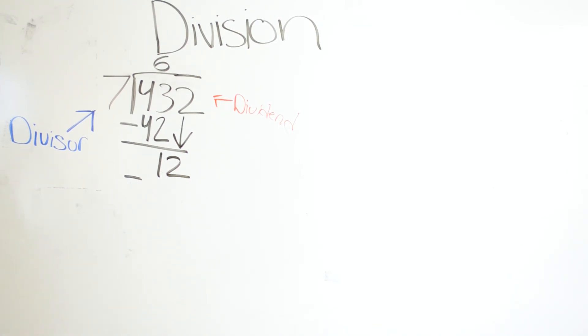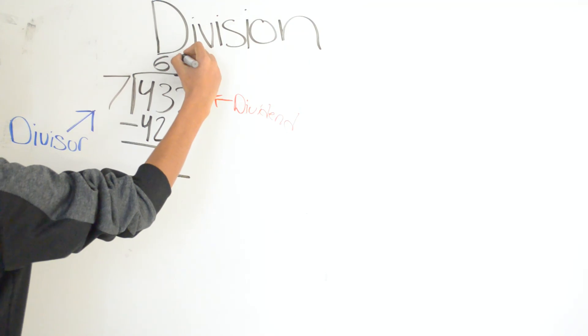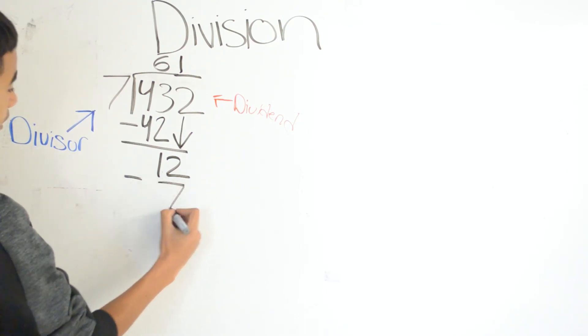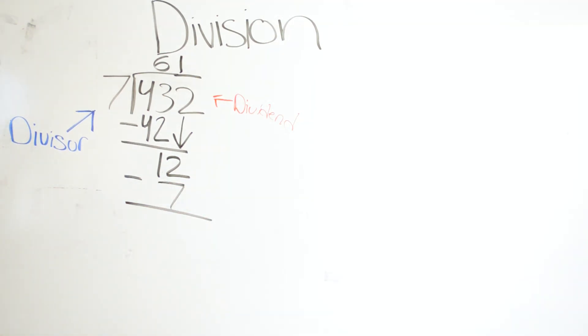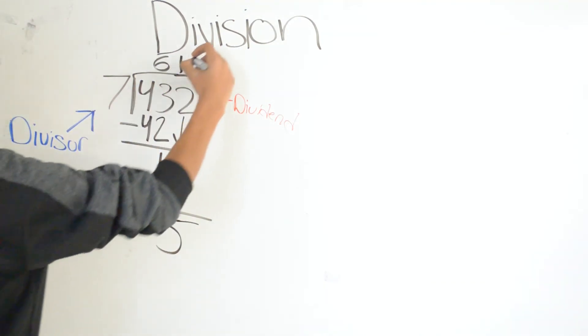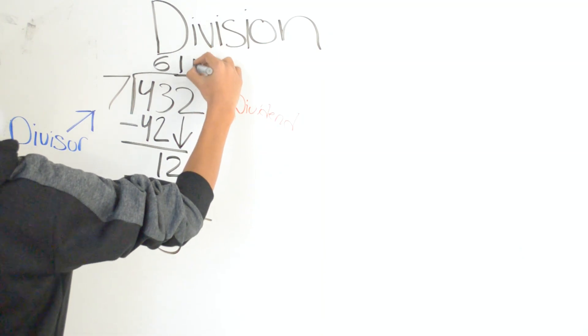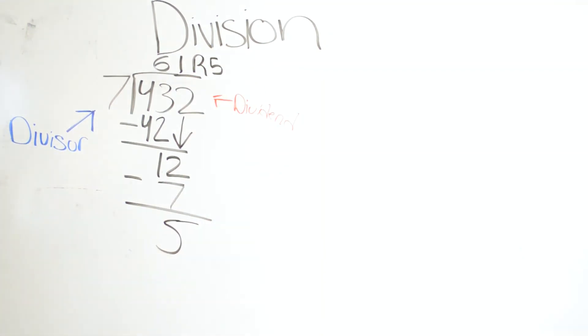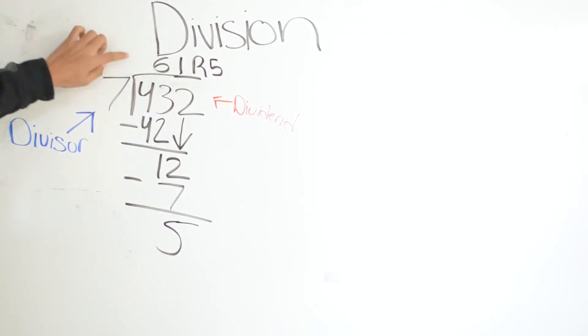7 goes into 12 one time, because 7 times 1 is 7. So 12 minus 7 is 5. So our remainder is 5. So our answer will be 61 with a remainder of 5.